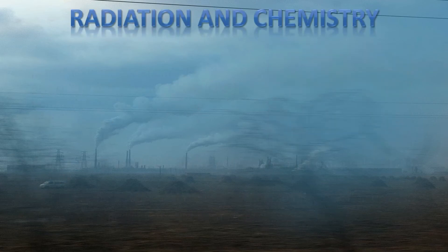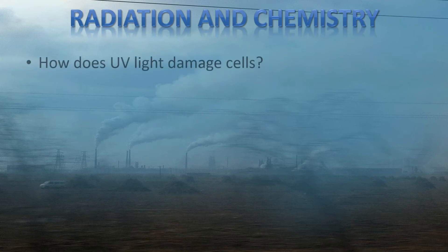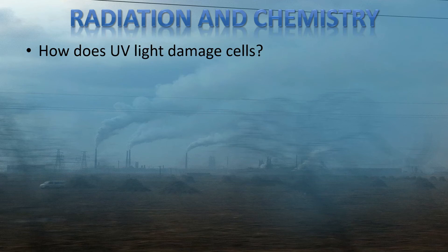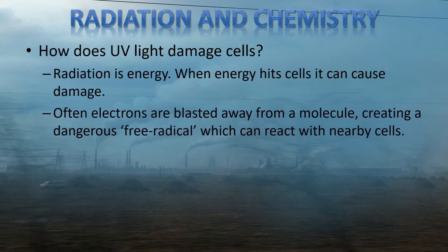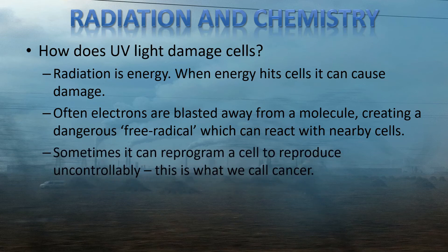Let's also have a quick look at how radiation affects our chemistry. How does UV light damage our cells? Well, as we've said before, radiation is a kind of energy, and when energy hits cells, it can cause damage. Often, what happens is that electrons are blasted away from a molecule, meaning that it creates a dangerous free radical molecule, which easily reacts with nearby cells. Sometimes these free radicals react with DNA, and this can reprogram a cell to reproduce uncontrollably — and this is what we call cancer. And there are other types of damage that can be caused by radiation too.